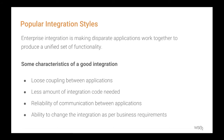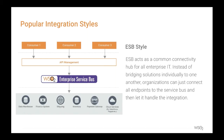Another key point is the reliability of communication — a good integration should ensure that communication between applications is reliable. Also, a good integration should be able to change based on business requirements. It's a fast-moving world and business requirements can change rapidly and become more complex, so any integration should be flexible enough to change on demand. Knowing what a good integration looks like, let's see the most popular integration styles or architectures available today.